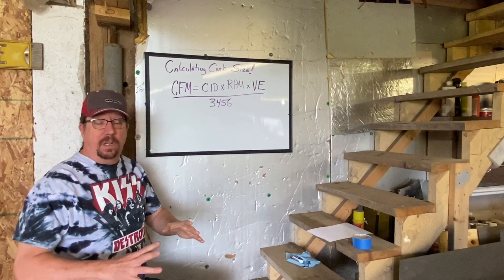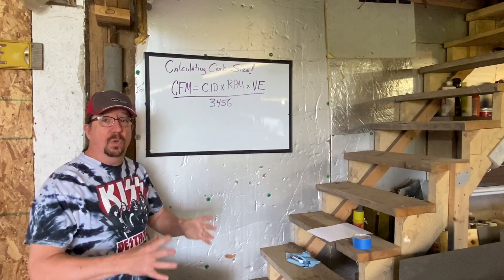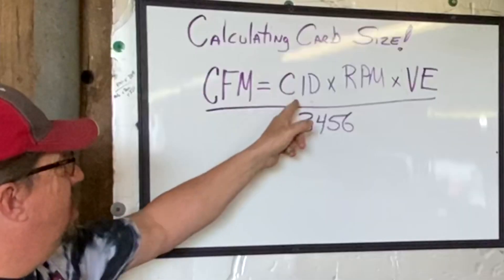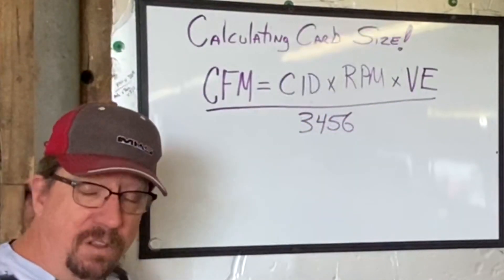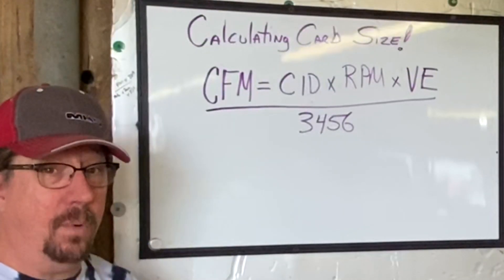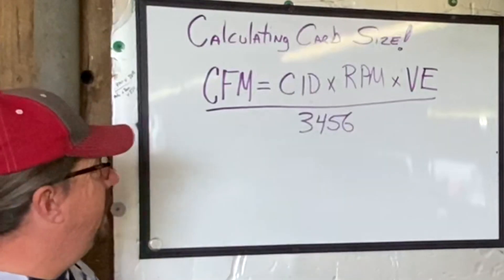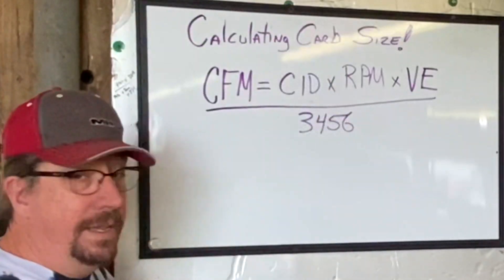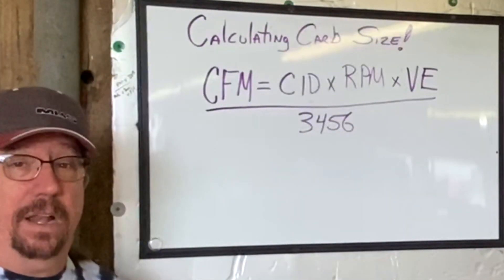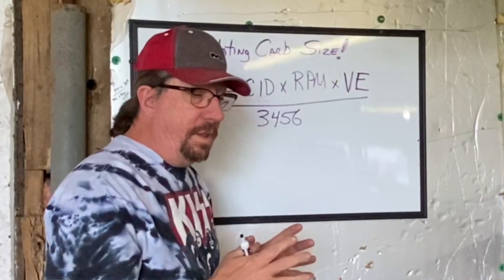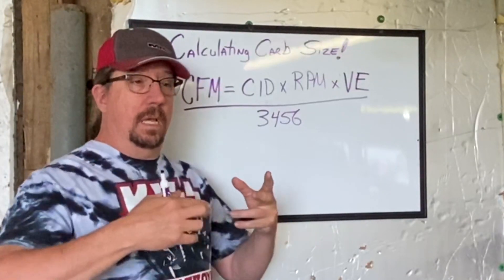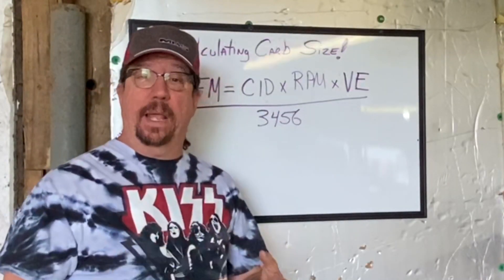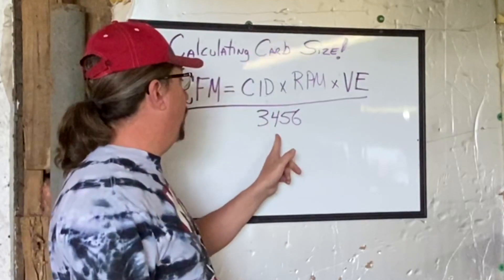One of the things that happens a lot is guys put carburetors on their engines that are just way too big. There are a number of factors that come into play. We want to talk about this formula where CFM equals cubic inches times RPM times volumetric efficiency, divided by 3456. There are big words and maths, so you're going to want to pay attention. One of the things that drives me crazy is people not understanding how to calculate things properly, and when they do have a formula, nobody has explained to them what the numbers mean. So we want to talk about 3456 first.